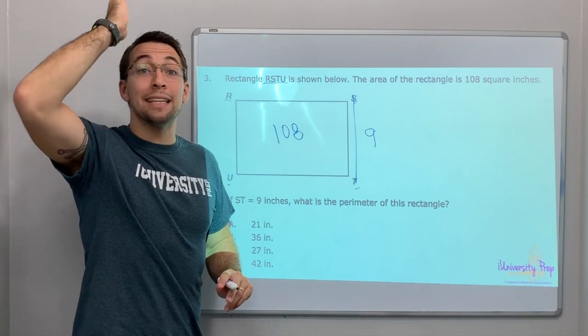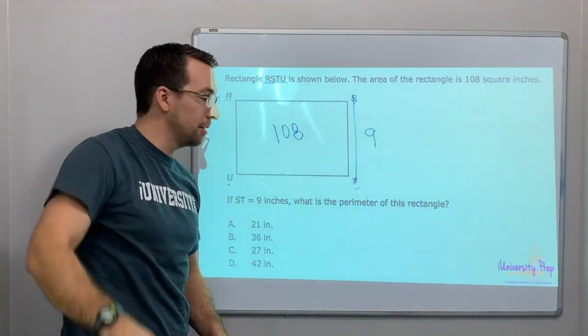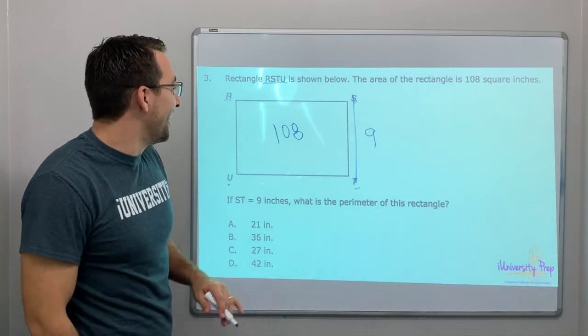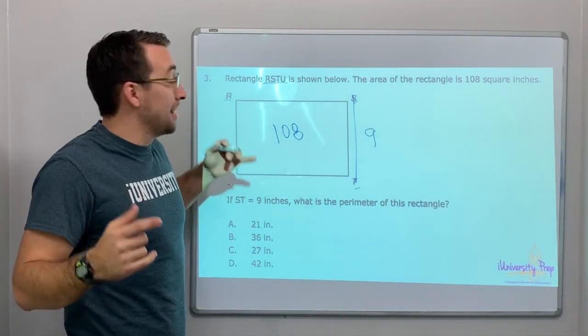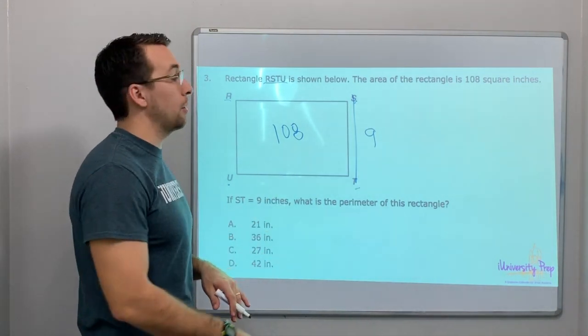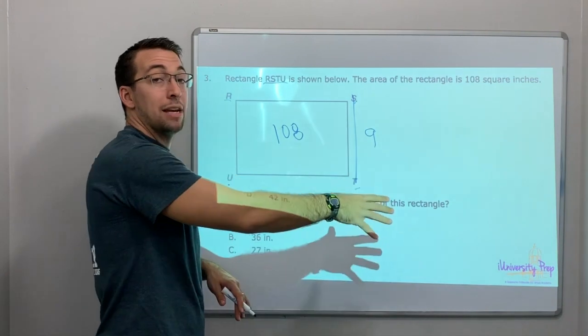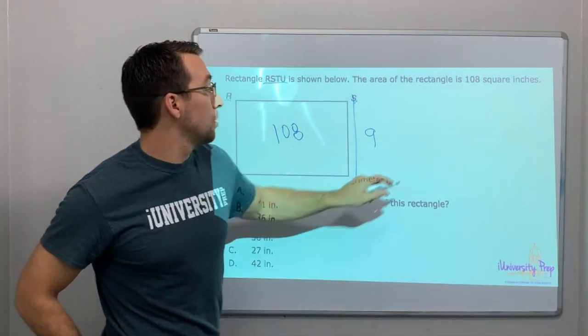Let's divide. Area equals length times width. If we have the area and we have the length, we can divide it to get the width. 108 divided by 9. 9 goes into 10 one time with a remainder of 1. 18 - 9 goes into 18 two times. That's 12.